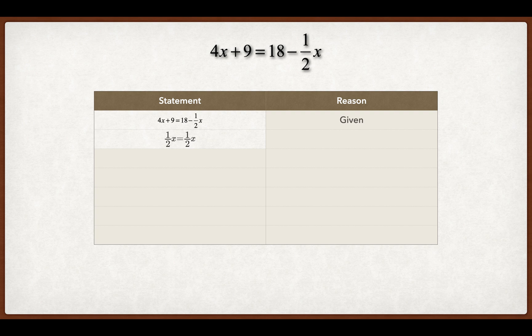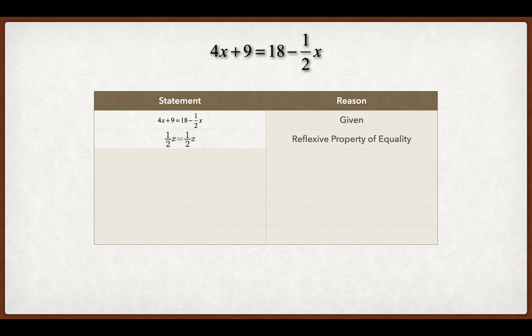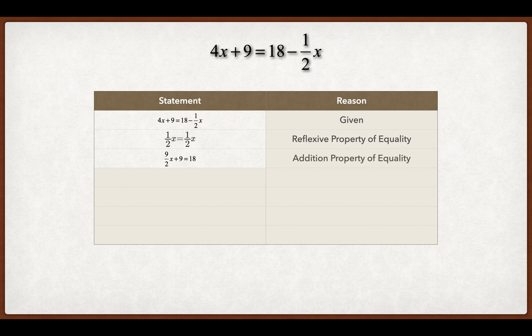Now let's start with our first thing. One half X equals one half X. Because the first thing I'm going to do is I'm going to move that half of an X over to the other side so that they're together. So I'm saying one half X equals one half X. And the reason why is reflexive. Because that's what I'm moving. Meaning now instead of four X, four X plus one half X gets us nine halves X plus nine equals 18. So what I did was I added one half X to both sides. So that's the addition property of equality.